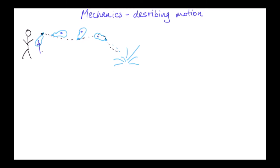But it turns out that there is a special point associated with every object that moves along a much simpler path than any other part of the object. And this point is called the center of mass.